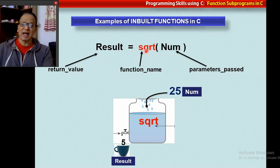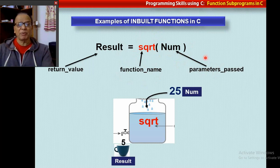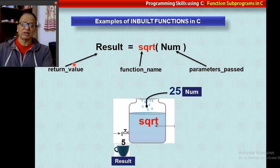So therefore, a function has a function name — please remember, very important — and there is a bracket here. Within this bracket, you are going to pass parameters: maybe one parameter, two parameters, more than two parameters, sometimes no parameters also. And then it gives you a result, which is called the return value.